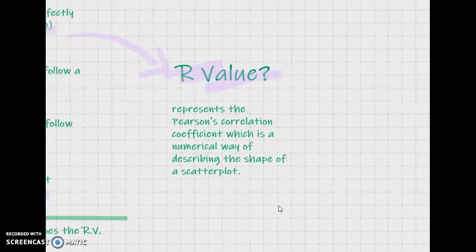The R value is Pearson's correlation coefficient. Remember, this is a numerical way of describing the shape of the scatter plot, because the closer it is to 1, the stronger or more linear it is. And if it's positive or negative, it also tells you the direction.